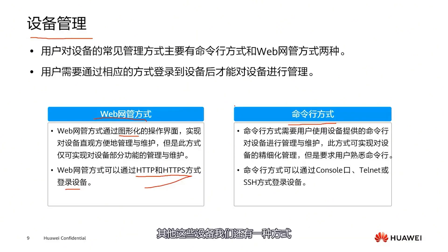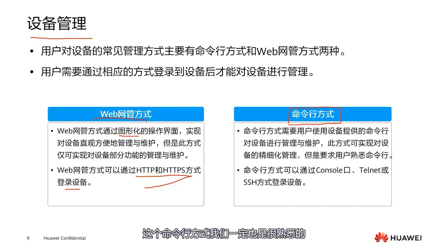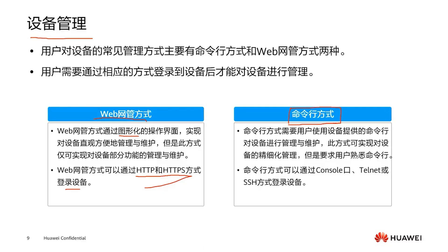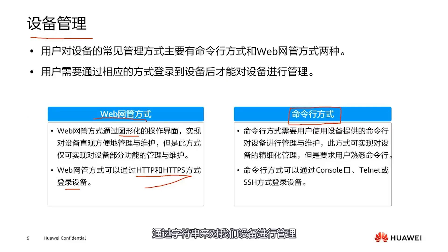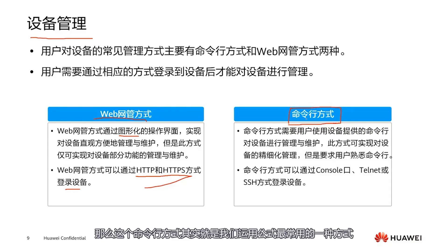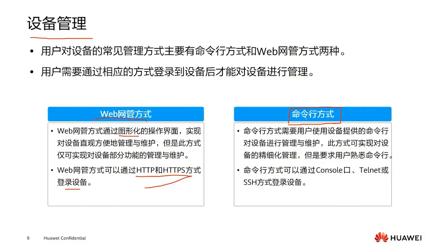For our Huawei ACs, routers, switches, and other devices, we have another method: command line management. As communication engineers involved in device maintenance, this command line method — a black screen where you enter various strings to manage devices — is definitely very familiar. It's just like those impressive engineers you see on TV. This command line method is the most commonly used by operations engineers; it's simple and fast.